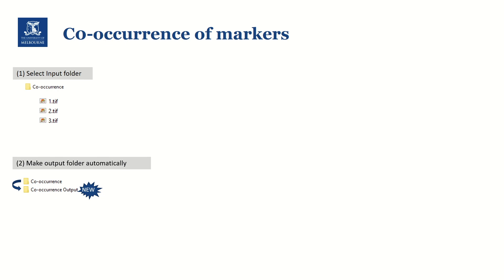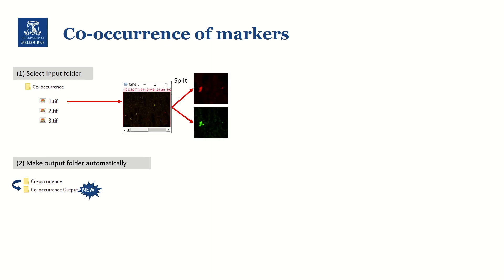In this script, we will first select the co-occurrence folder as our input folder, and as we did in the previous example, we will generate the output folder automatically. In this co-occurrence folder, we have three TIFF images, and each image has two channels — red and green — so we will split the channel. From these two channels, we would like to know how many cells are green positive, red positive, and double positive. For example, one cell is positive to both green and red, another cell is only positive to green, and another cell has very faint green but strong red. So depending on the threshold, that cell will be counted either as red positive or double positive.